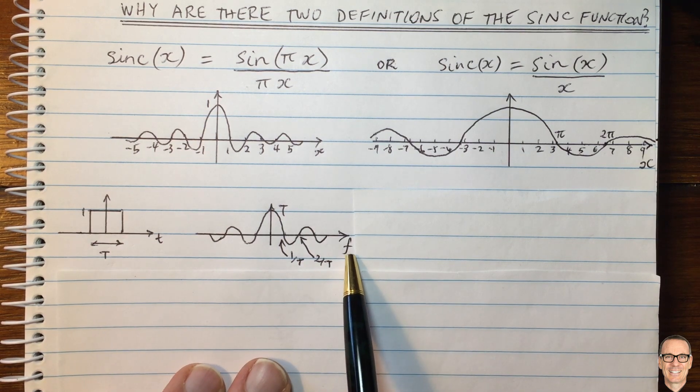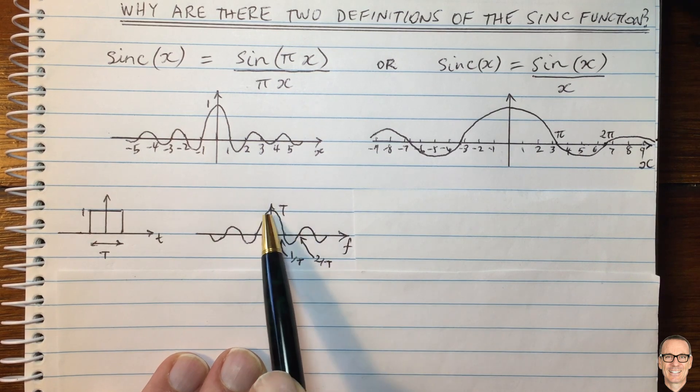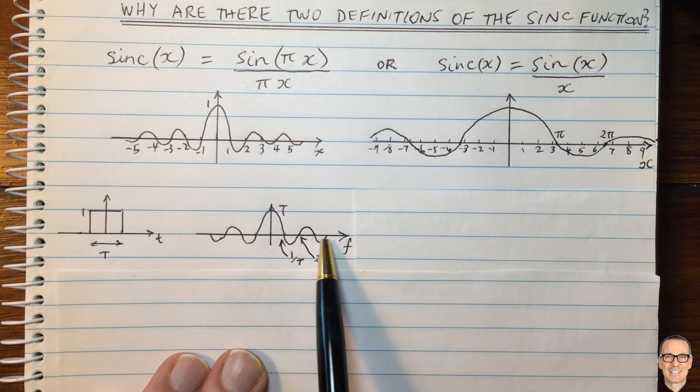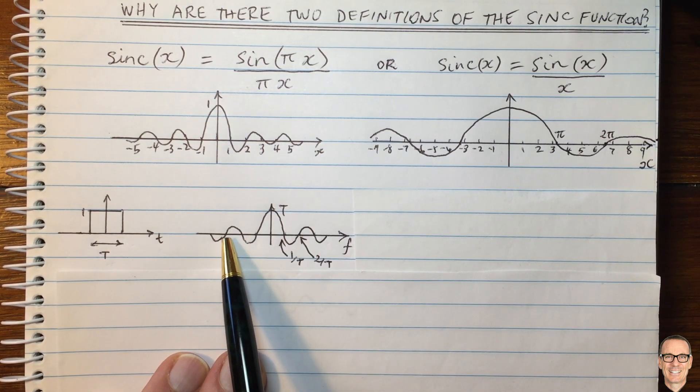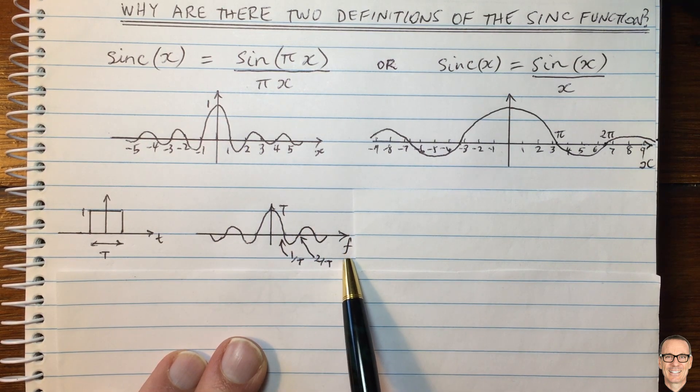then if we plot it with respect to frequency f, then the first crossing of the sinc is at 1 divided by T. The second crossing is 2 divided by T, and so on. And of course, negative 1 on T on the negative side. So this is if we plot it with respect to the frequency in hertz.